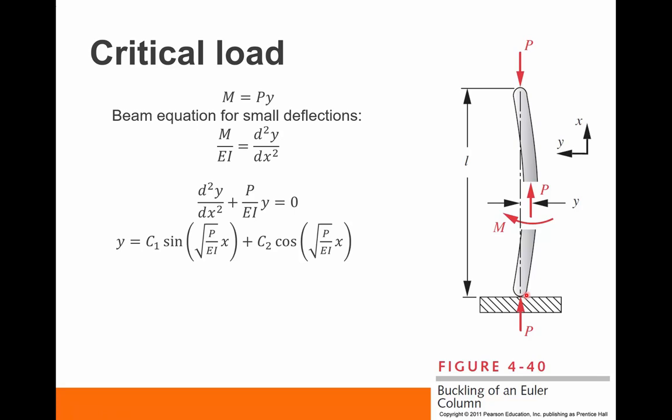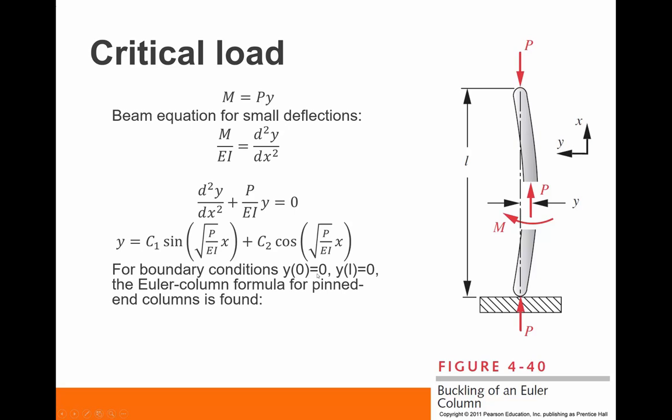If we set boundary conditions to be a pinned column, in other words, that there is no movement in the X or Y direction at the base of the column and also at the top of the column, so Y of 0 equals 0 and Y of L equals 0, plugging those into this differential equation Y, we'll get the Euler column formula.